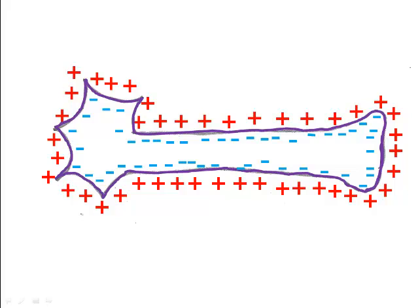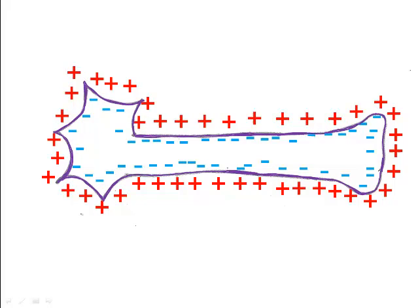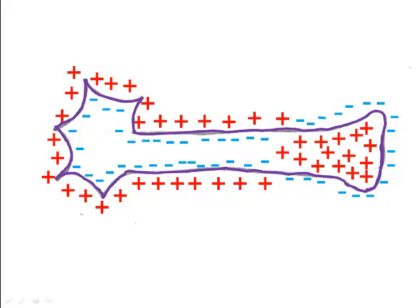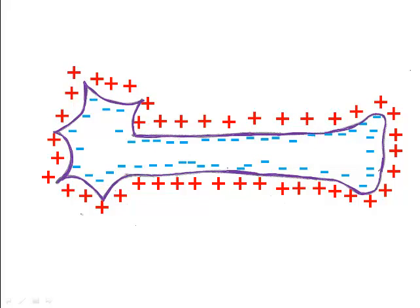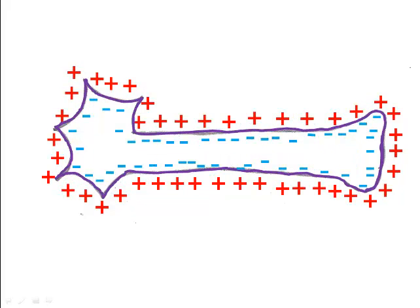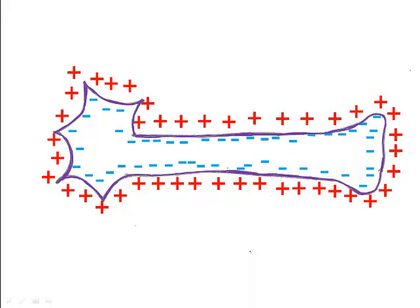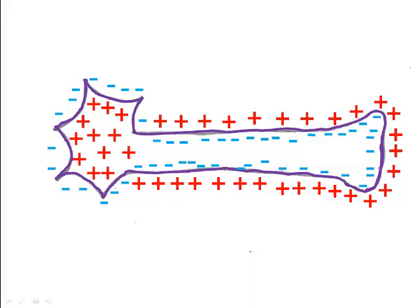More frequent waves of depolarization along a sensory neuron are interpreted by the central nervous system as a more intense stimulus. Thus, a sharp pinprick would result in many waves of depolarization in a short period of time, whereas a gentle poke would result in fewer waves of depolarization in the same period of time.